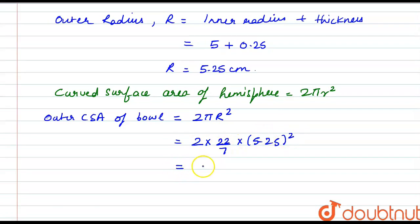So this will be 173.25 cm². So the outer curved surface area of the bowl comes out to be 173.25 cm².